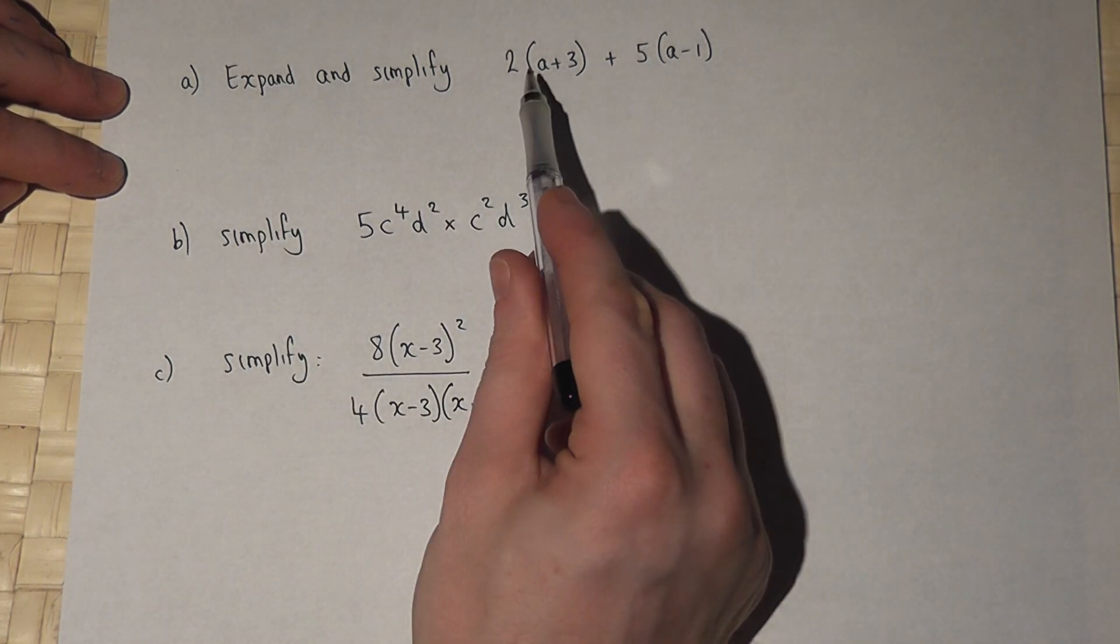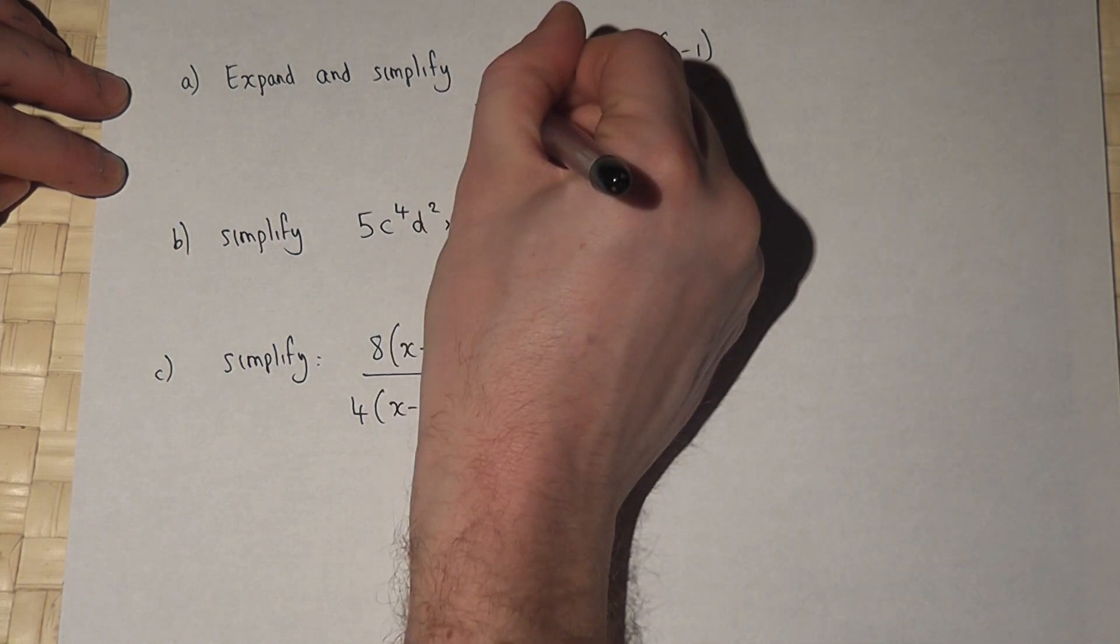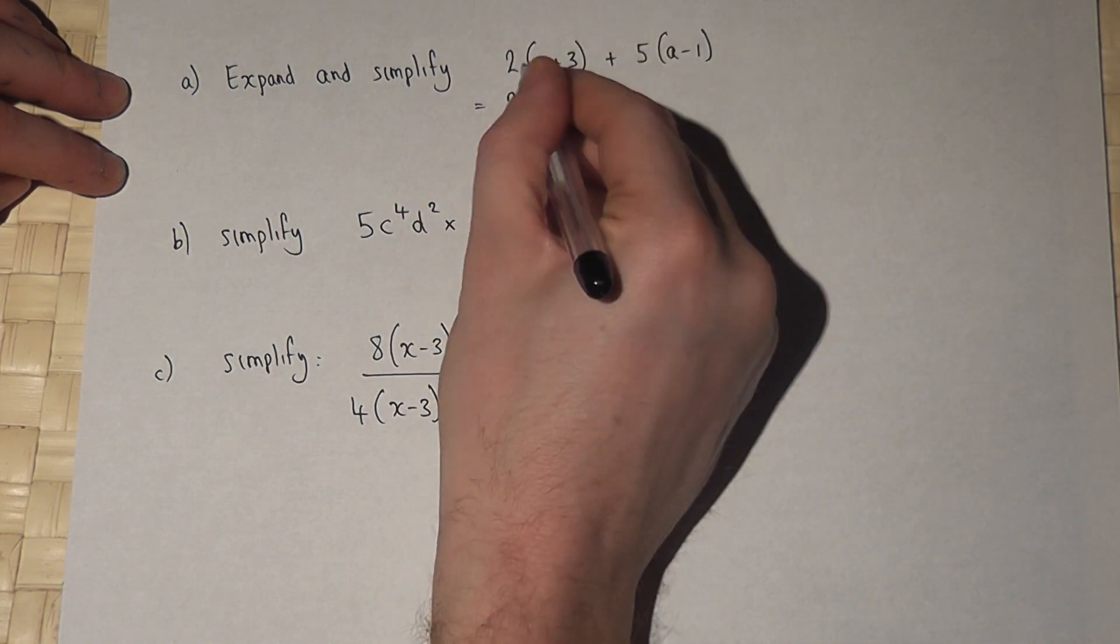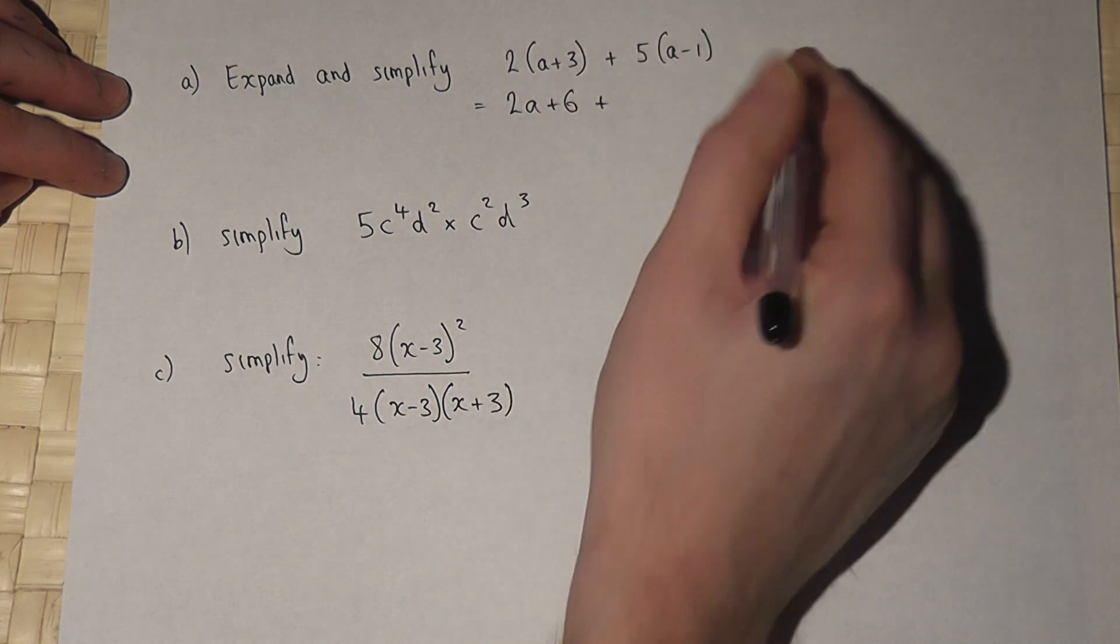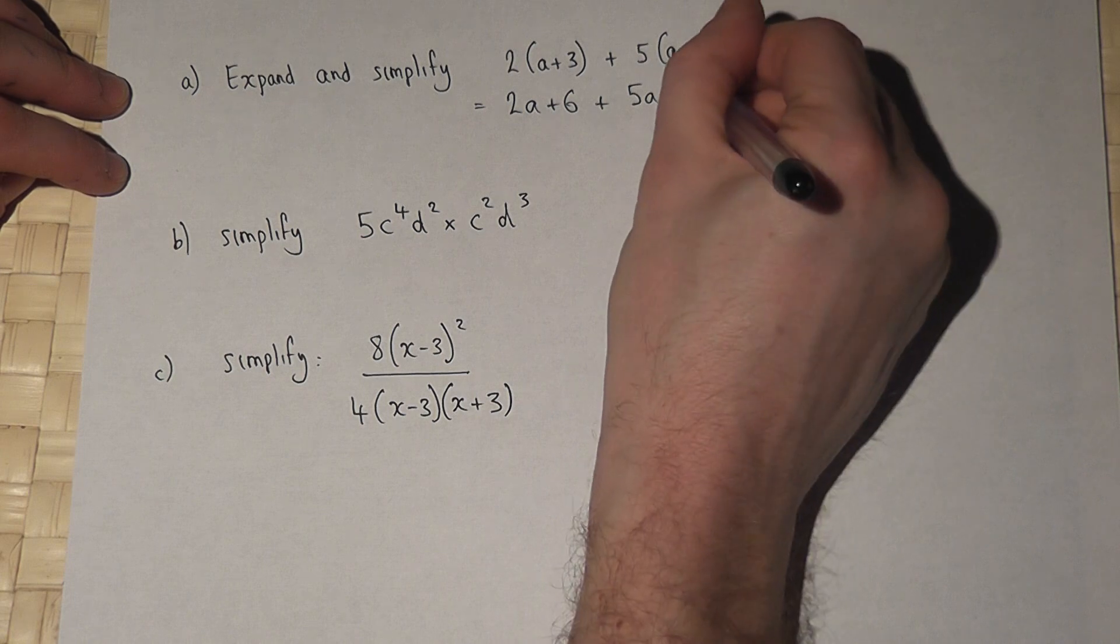In the first one, we expand both brackets separately to get 2 lots of a plus 2 times 3 is 6, plus 5 lots of a take away 5 times 1.